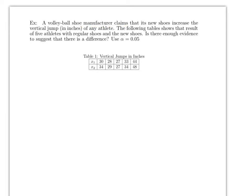Here is the example: a volleyball shoe manufacturer claims its new shoes increase vertical jump height. You want to check whether there is a difference between the old shoes and the new shoes. The table shows results for five athletes tested with regular shoes and then with new shoes. Before starting, you need to figure out D-bar and S_D — without those you cannot do the problem.